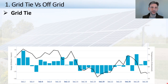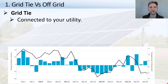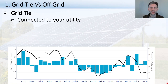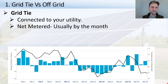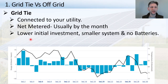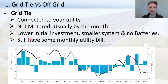For a grid-tie system, you will still be connected to your utility company. They will provide any power that your system doesn't produce, and if you are able to do net metering with them, they will purchase any power you produce over what you need. Net metering is usually done by the month. With a grid-tie system, the initial investment is smaller — there are no batteries required — but you do still have some monthly utility bill.